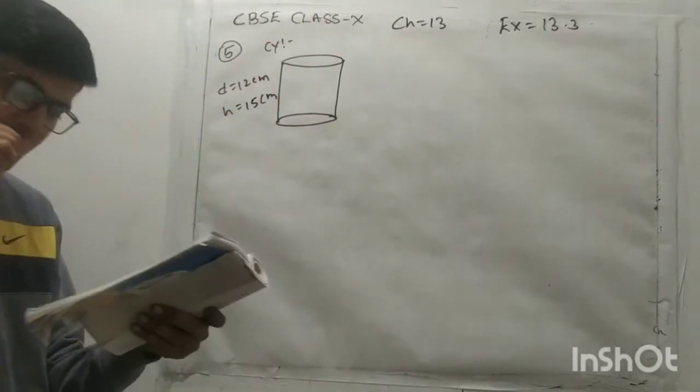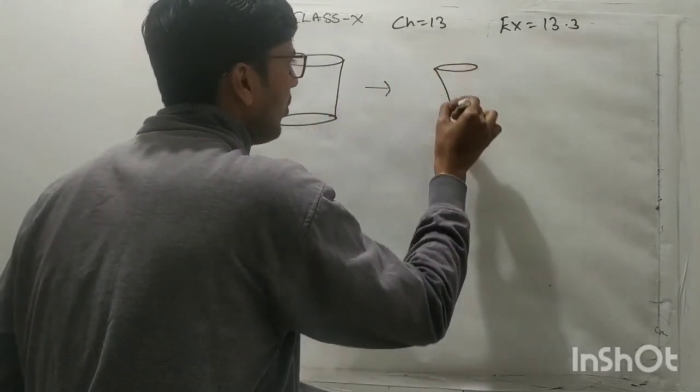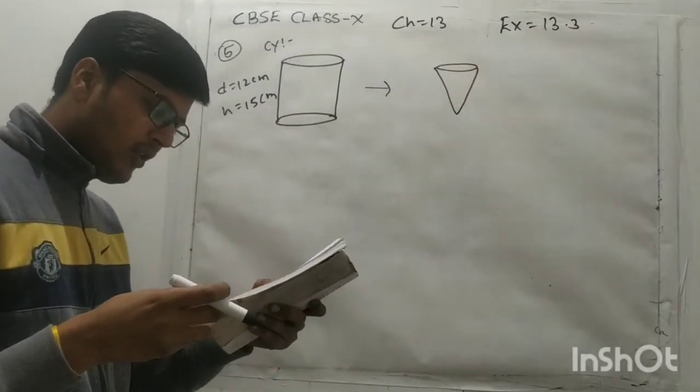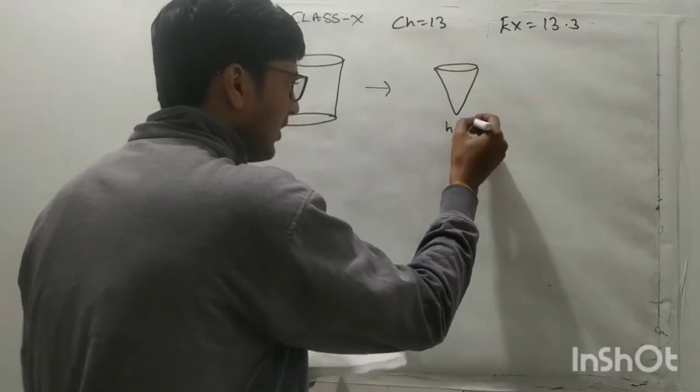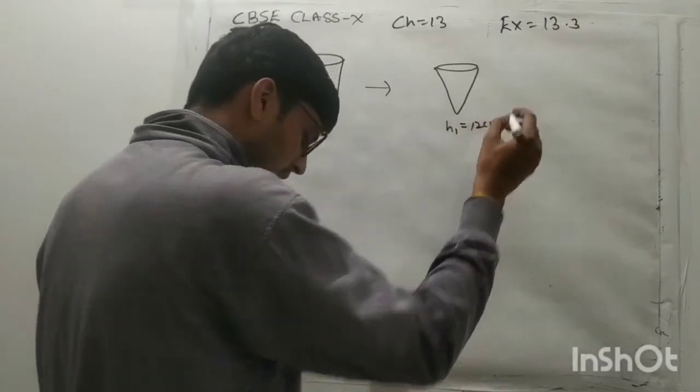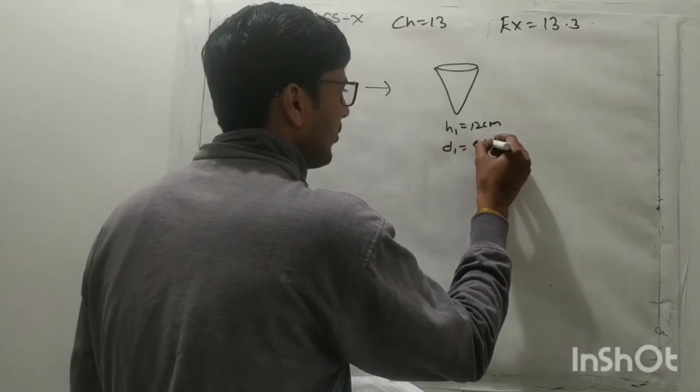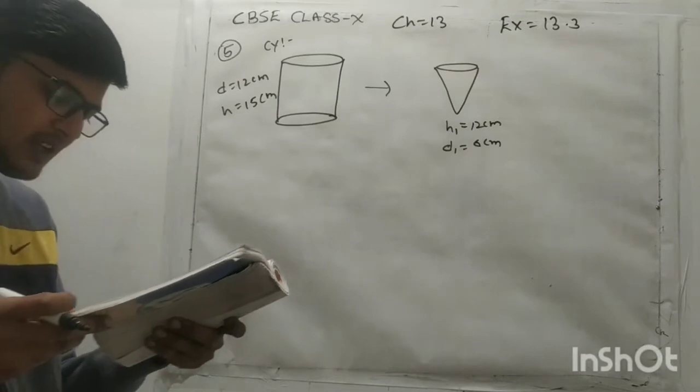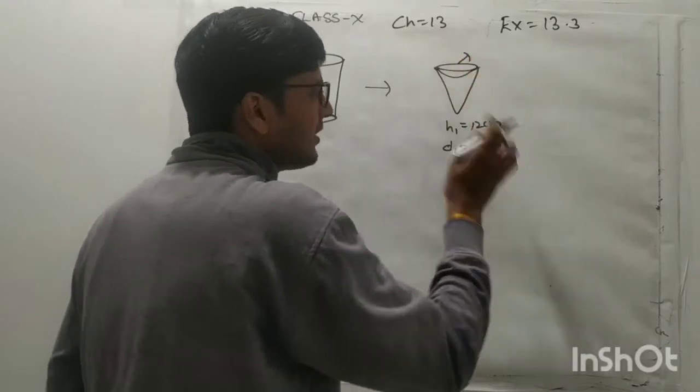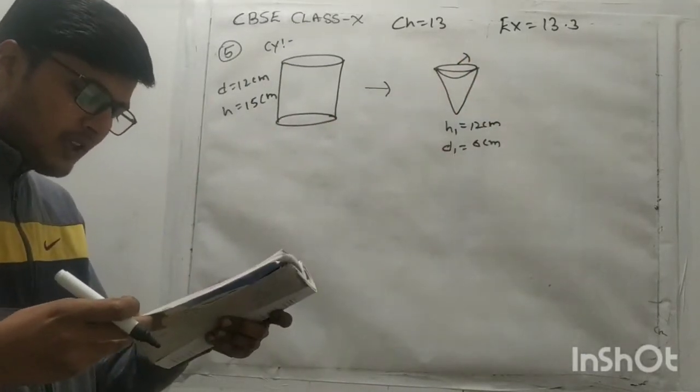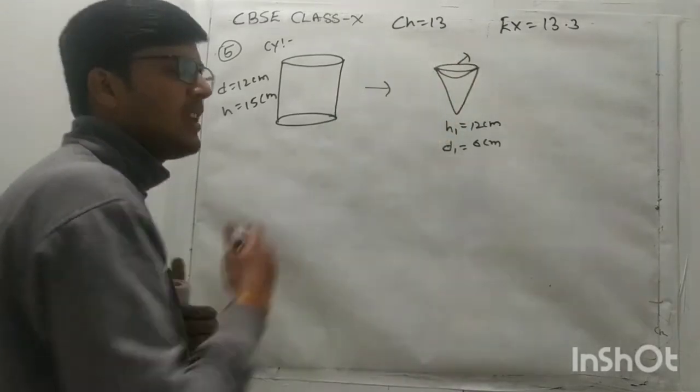Now what the question says, the ice cream is to be fitted into cones of height 12 cm. So height of cone, suppose I take it is h1, so it is 12 cm and diameter is 6 cm. It is having a hemispherical shape on the top. So this is the diameter same. Find the number of such cones which can be fitted with ice cream.